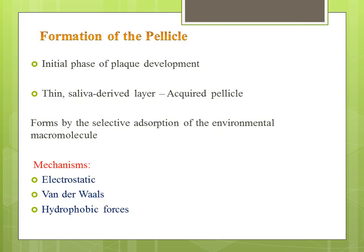Coming to formation of the pellicle, it is the initial phase of plaque development. All surfaces in the oral cavity, including soft and hard tissues, are coated with a layer of organic material known as acquired pellicle — a thin, saliva-derived layer. It forms by selective adsorption of environmental macromolecules through electrostatic, van der Waals, or hydrophobic forces. It mainly contains glycoproteins, phosphoproteins, histidine-rich proteins, and proline-rich proteins, as well as enzymes like amylase, which function as adhesion sites for bacteria. The pellicle should be present on the surface for a few hours prior to bacterial adherence.